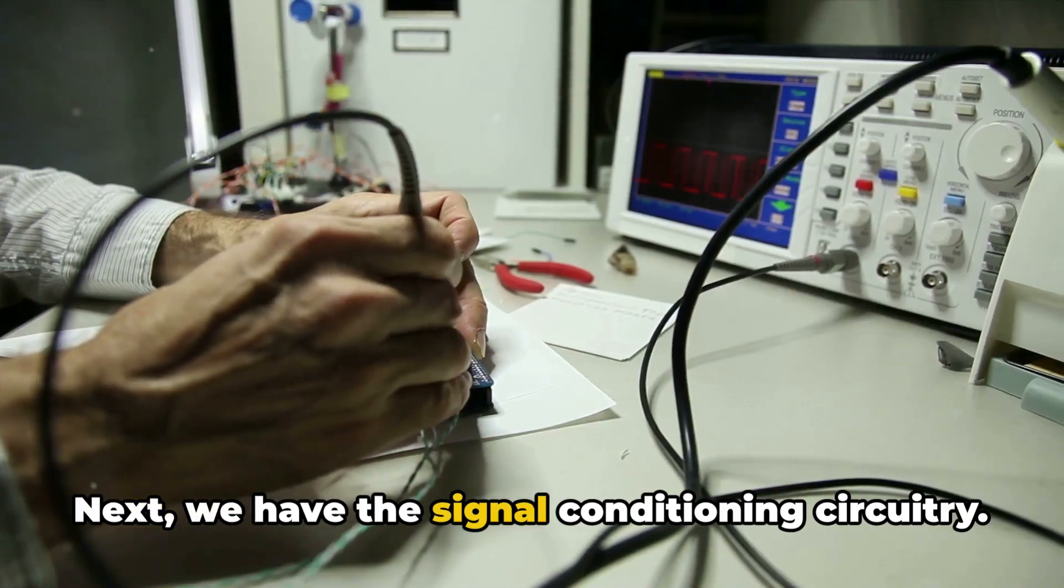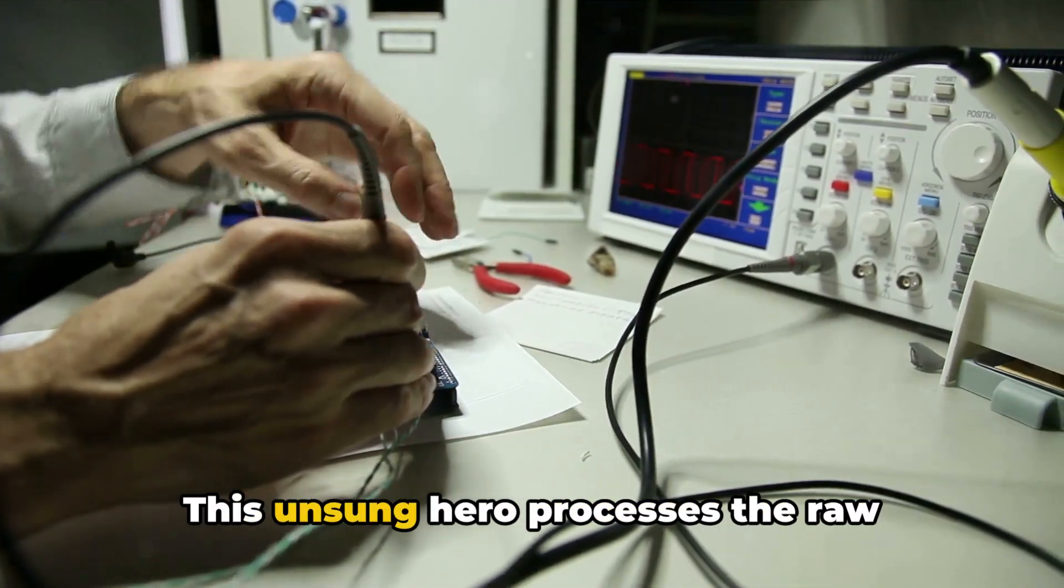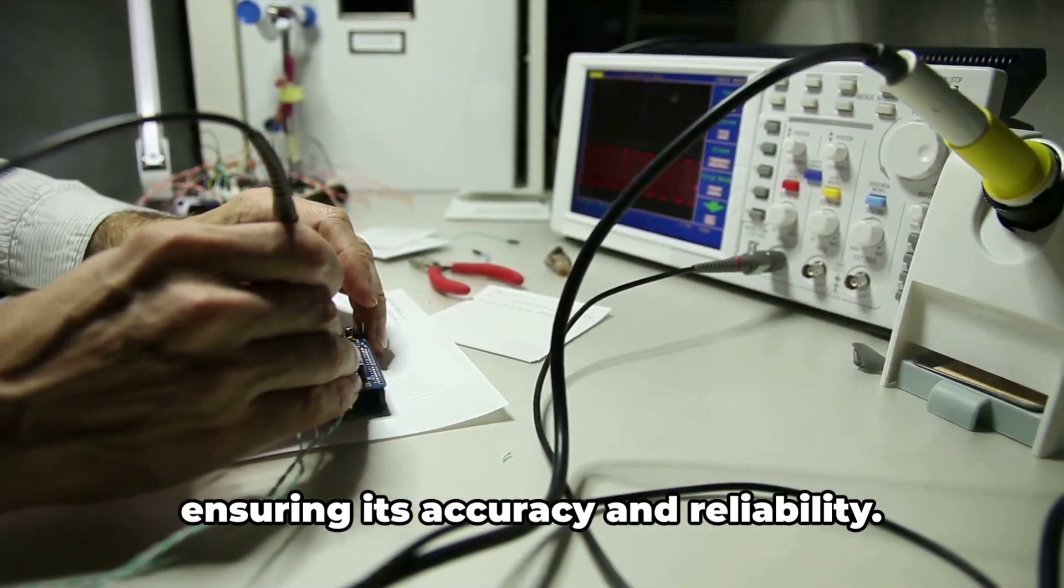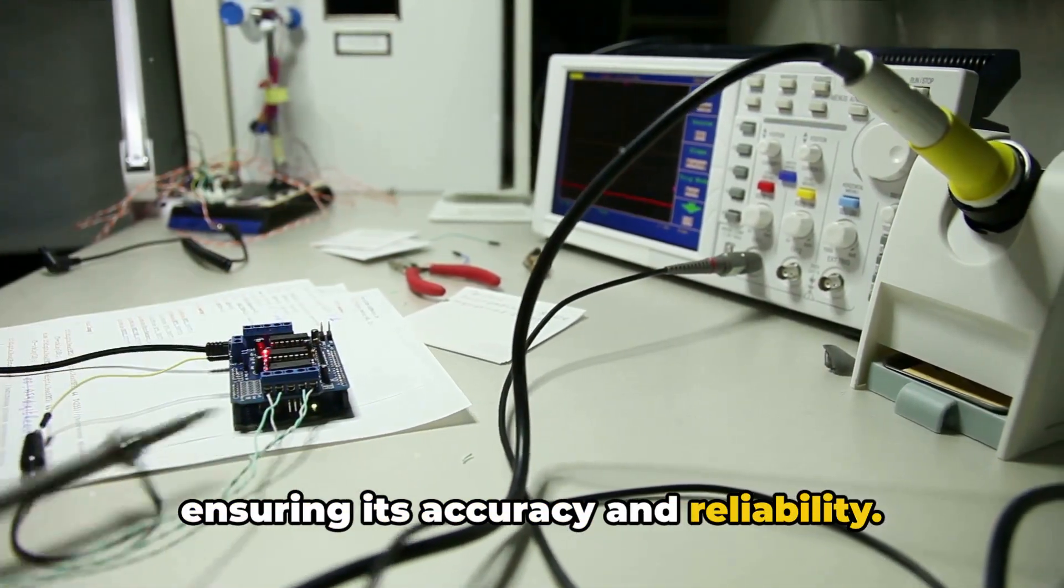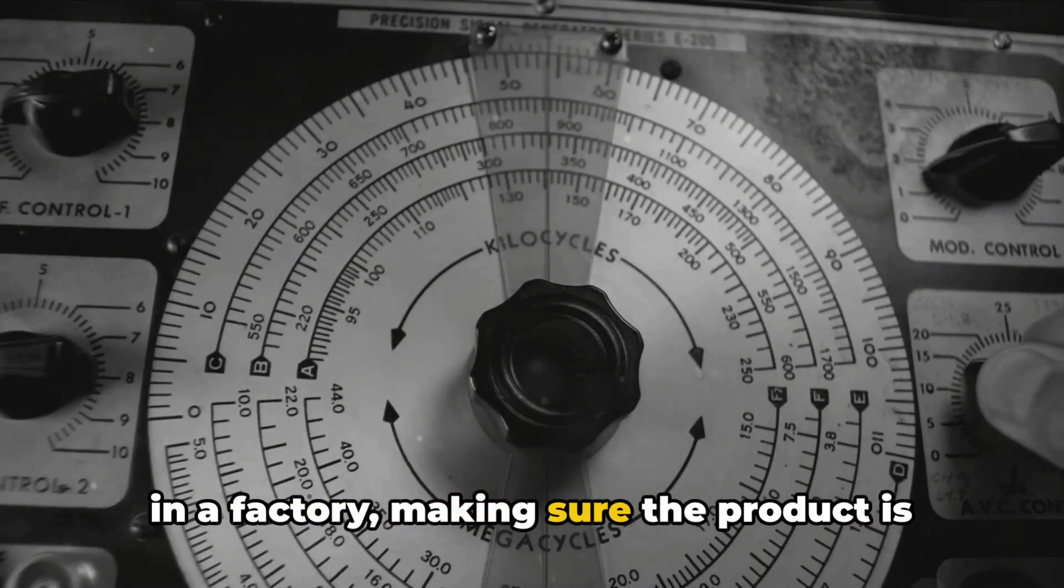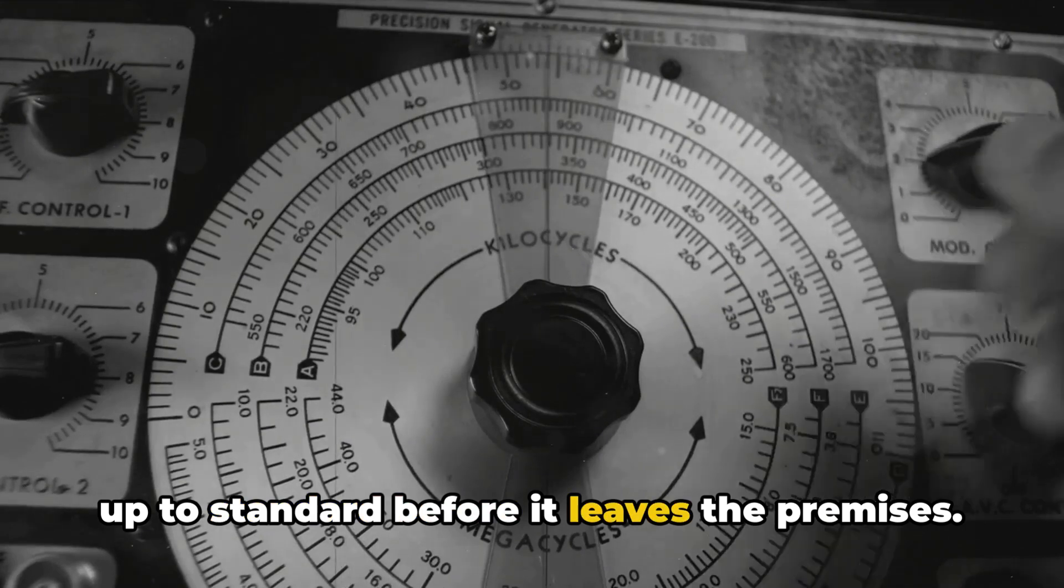Next, we have the signal conditioning circuitry. This unsung hero processes the raw electrical signal from the sensor, ensuring its accuracy and reliability. It's like the quality control department in a factory, making sure the product is up to standard before it leaves the premises.